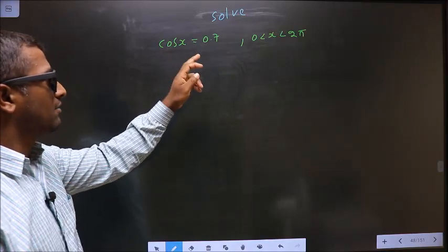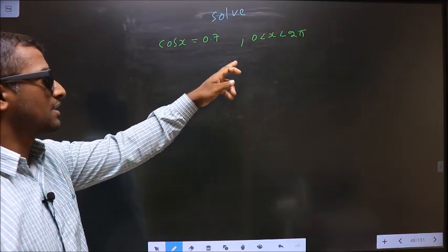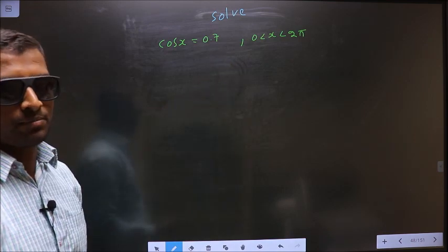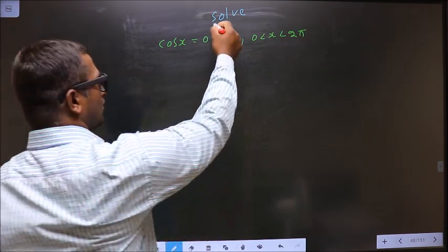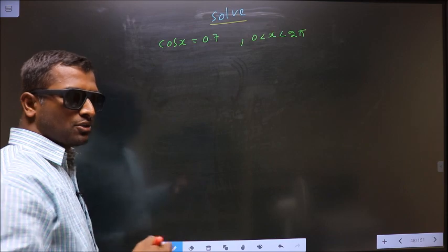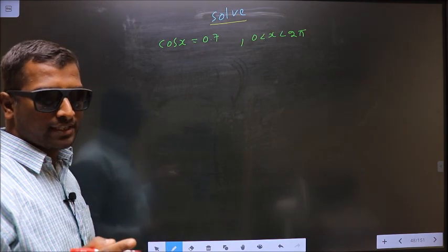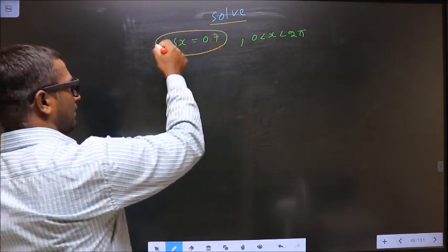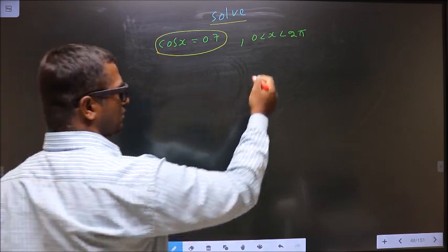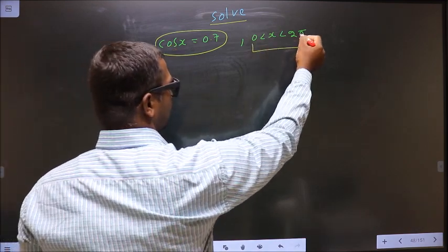Solve cos(x) = 0.7 where x lies between 0 to 2π. You should find the values for x satisfying this equation that lie in this interval.